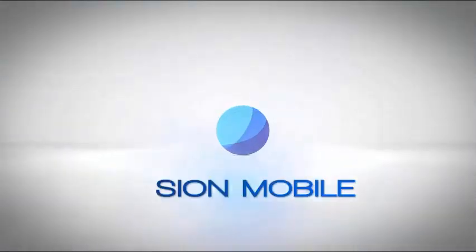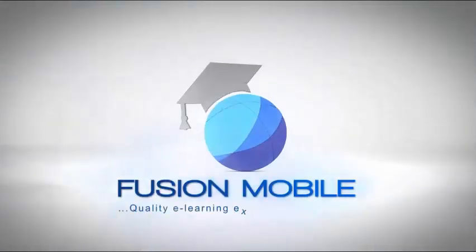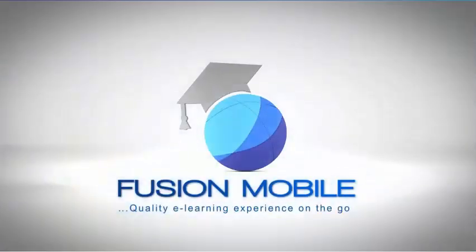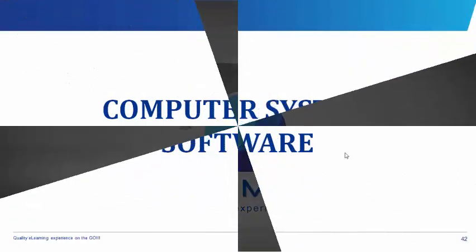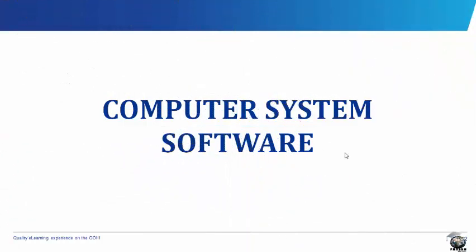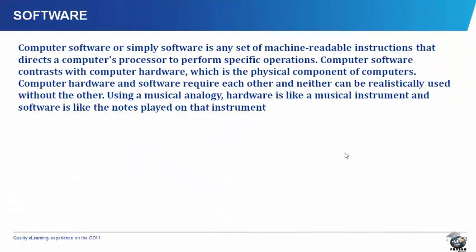Fusion Mobile — quality e-learning experience on the go. Computer System Software. What is software? A computer software, or simply software, is a set of machine-readable instructions that directs a computer's processor to perform specific operations.